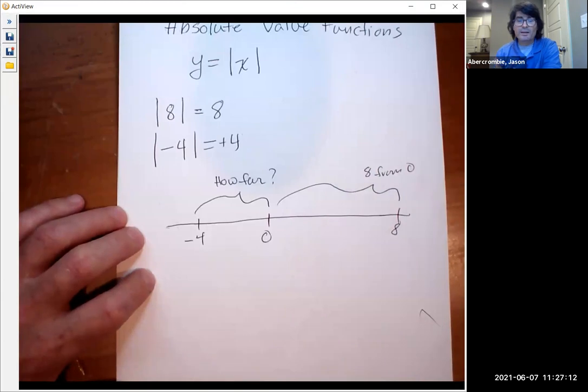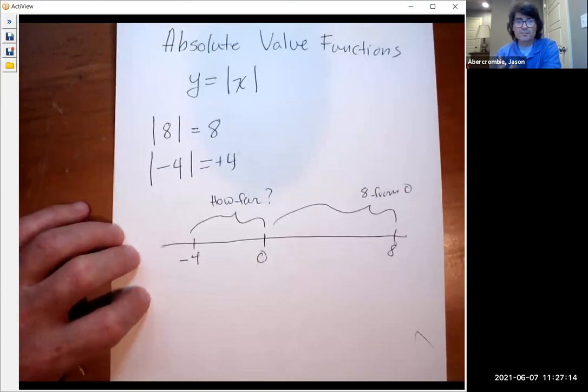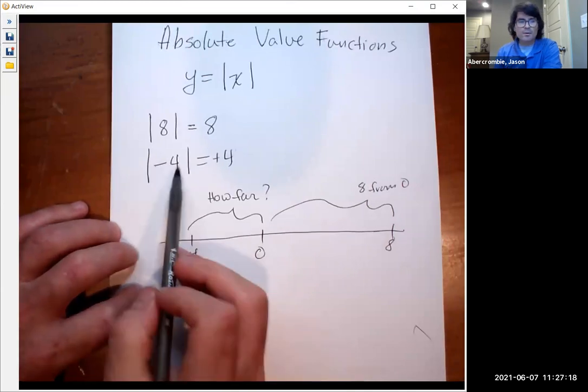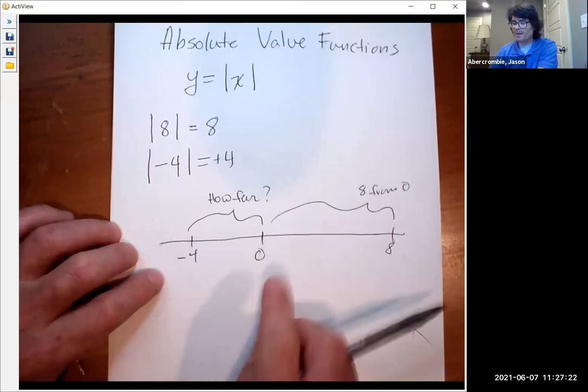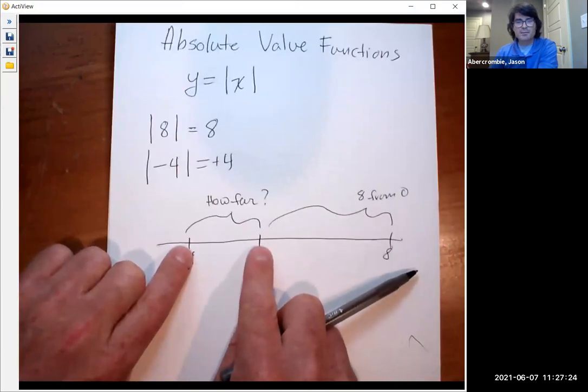So when we talk about absolute value at the very basic level, we're just asking how far is this number away from zero? By absolutely, we mean what is the size of the distance that we are from zero?